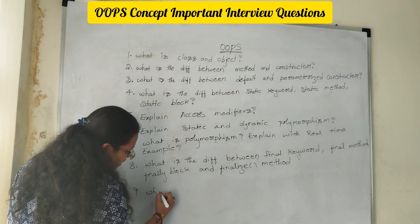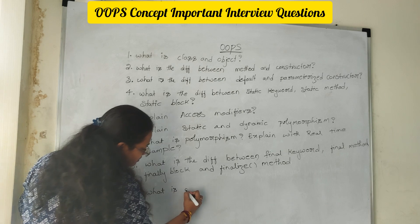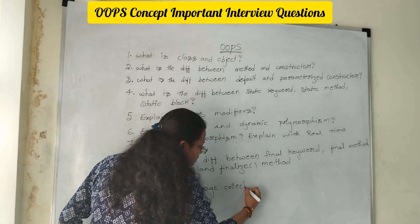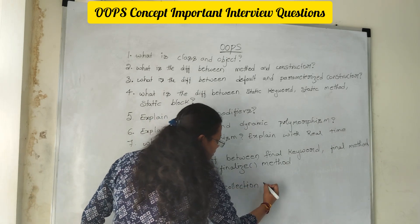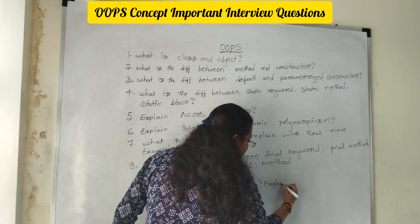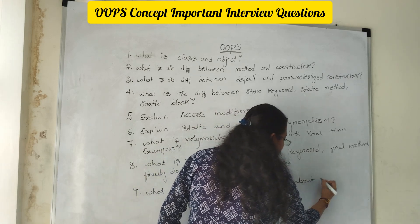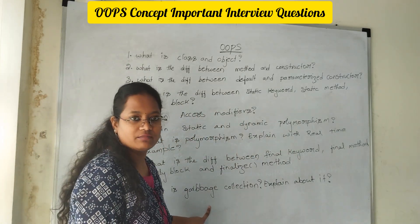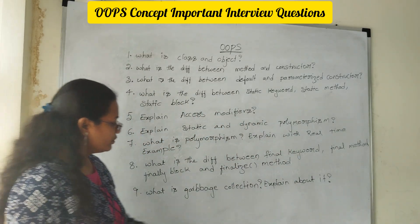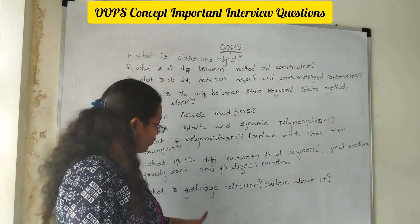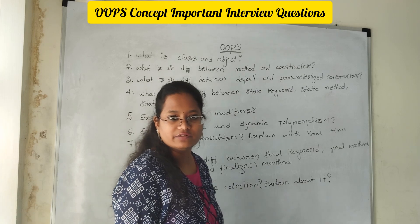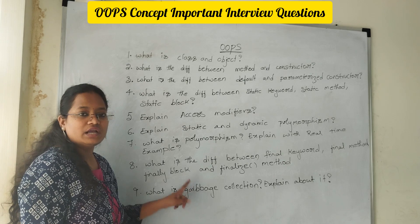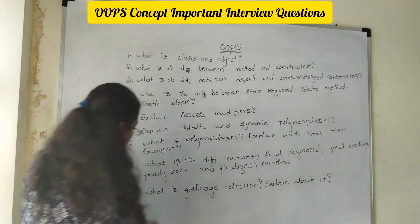Ninth question: what is garbage collection? Explain about it — how objects are being removed and how objects are being marked. You need to explain very clearly about garbage collection: what method we are using, which package the finalize method is present in, and mention all things about garbage collection.